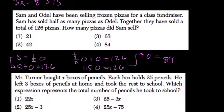So that's how many Odell sold. Now for what Sam sold, Sam sold half of what Odell sold. So if Odell sold 84, multiply that by half to get 42, the amount of pizzas that Sam sold.